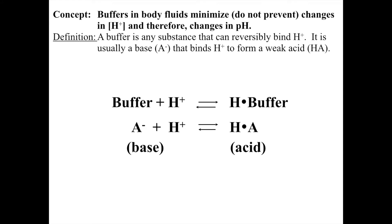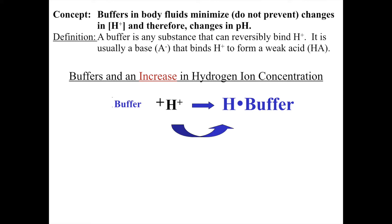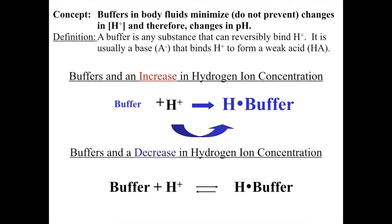Buffers reversibly bind to hydrogen ion, and in the body they minimize changes in pH but do not prevent them. If there is an increase in hydrogen ion, the buffer will bind to the hydrogen and the reaction will move in the forward direction. If there is a decrease in hydrogen ion concentration, the reaction will move in the opposite direction to keep the pH balanced.